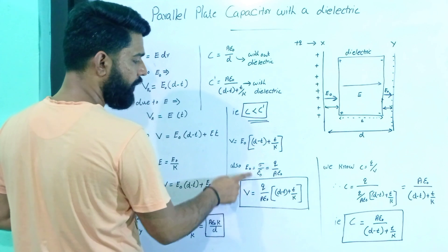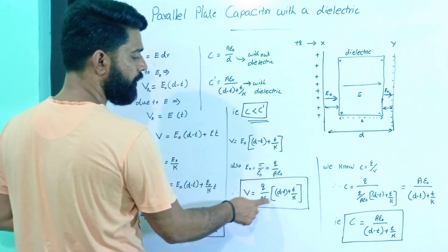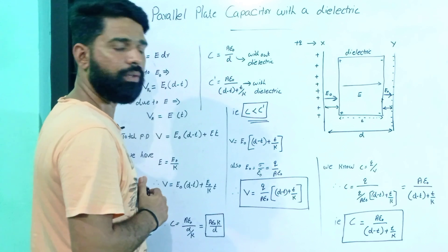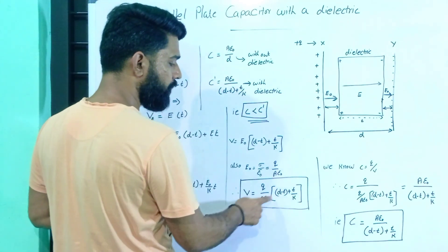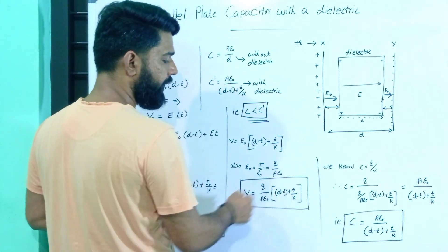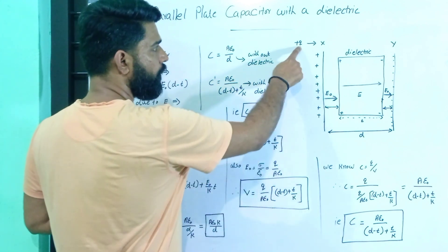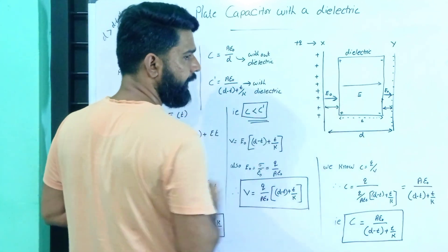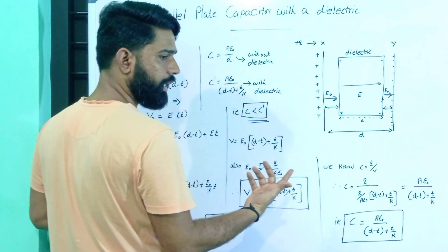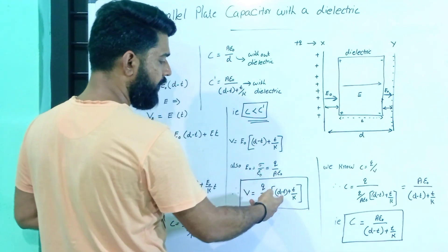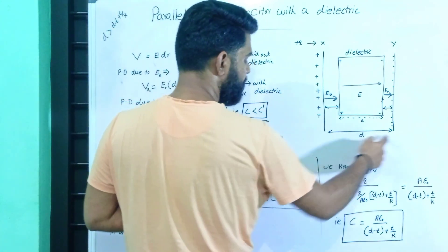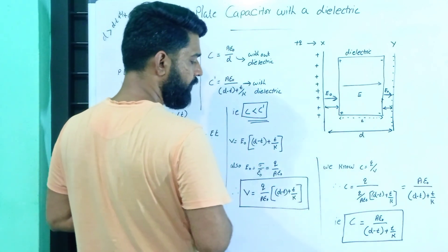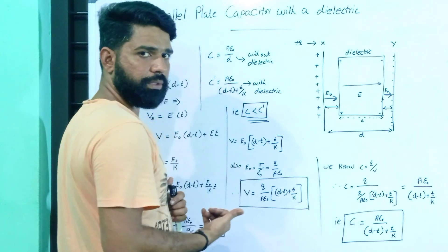V is equal to Q divided by Aε₀, multiplied by (d minus t plus t by K). Here Q is the charge, A is the area of the plate, ε₀ is the permittivity constant, d is the distance between the two plates, t is the thickness of the dielectric slab, and K is the dielectric constant.